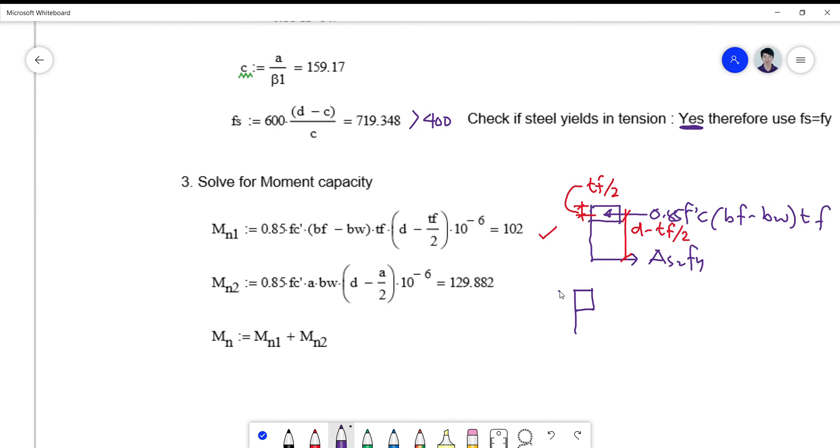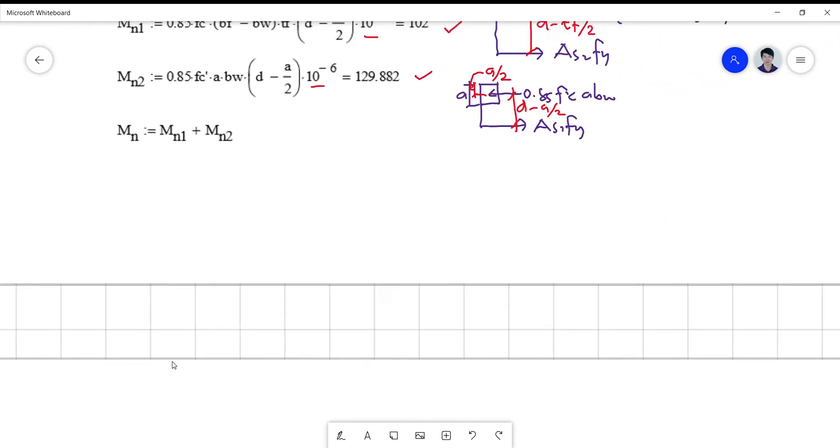(BF - BW) times TF multiplied by the moment arm, which is d minus TF over 2, which is this distance here, thickness divided by 2, so you get the value there. And then for MN2, we have the depth of the stress block as computed earlier. This is still 0.85 f'c prime, so this is A times BW, this is now your AS1 times fy. The moment arm is d minus A over 2 because centroid of that is A over 2. And you get this one here. You divide it by 10 to the 6 to get a kilonewton meter.